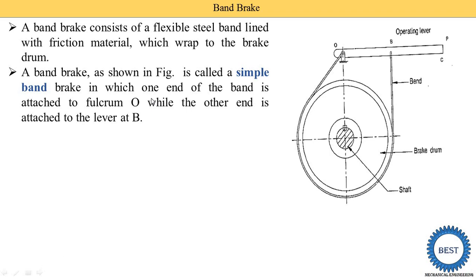Then after I will explain the differential band brake. In a simple band brake, one end of the band is attached to the fulcrum O while the other end is attached to the lever at point B. The lever has a fulcrum point and the band is attached at this fulcrum point. The other end of the band is attached to the lever at point B.